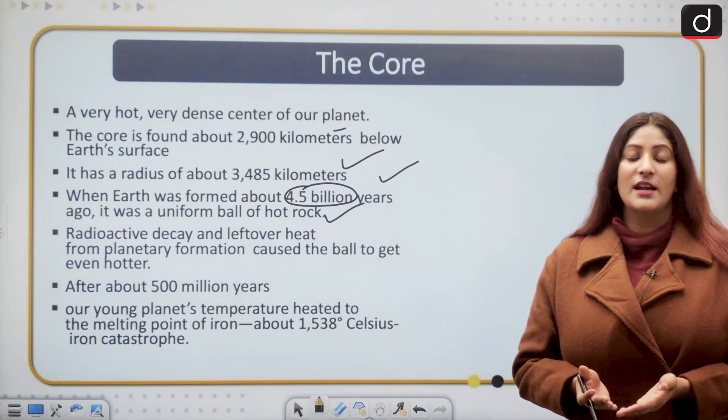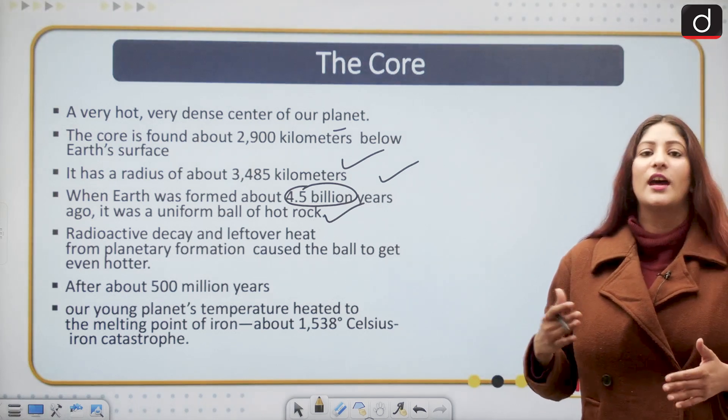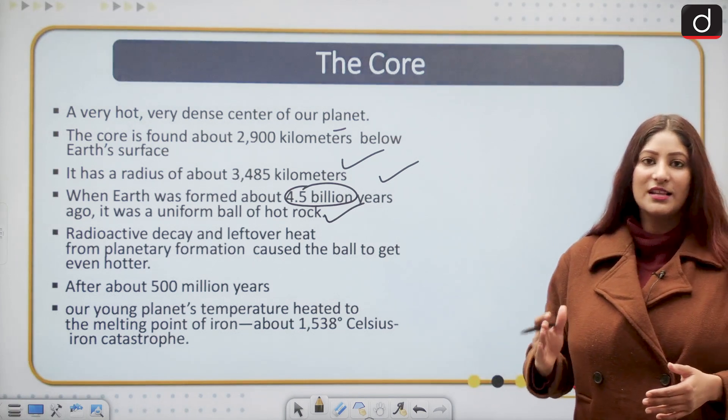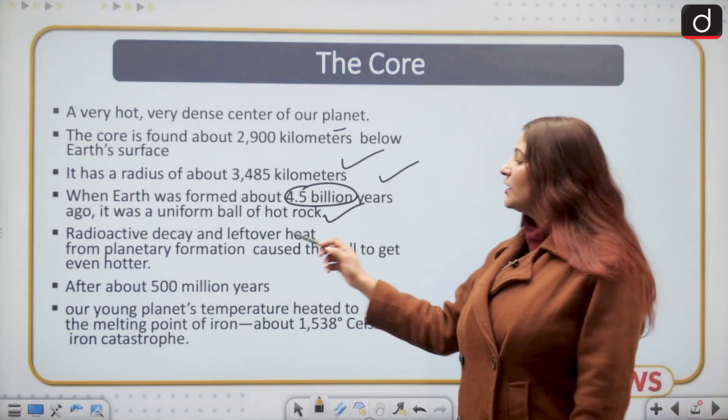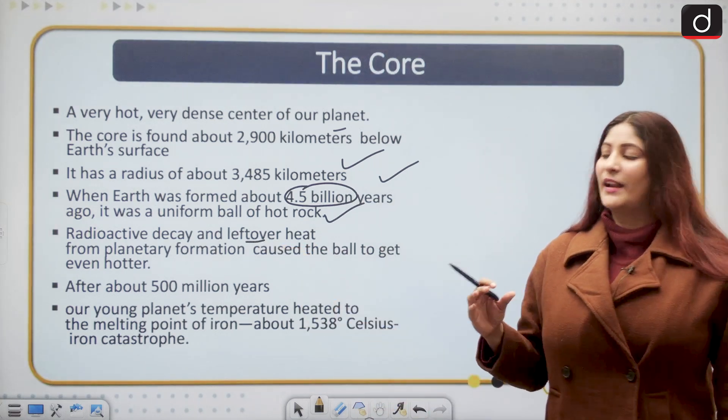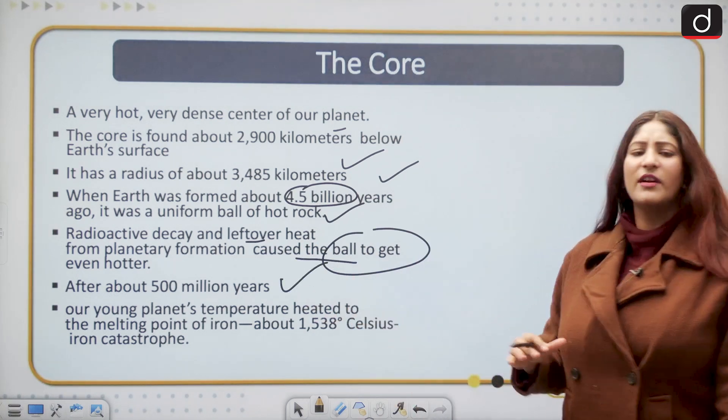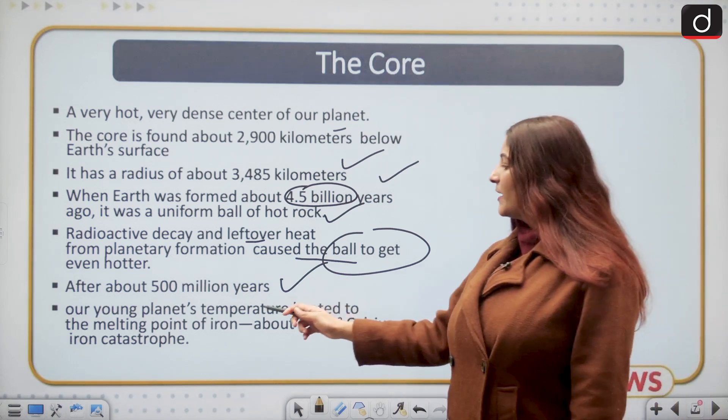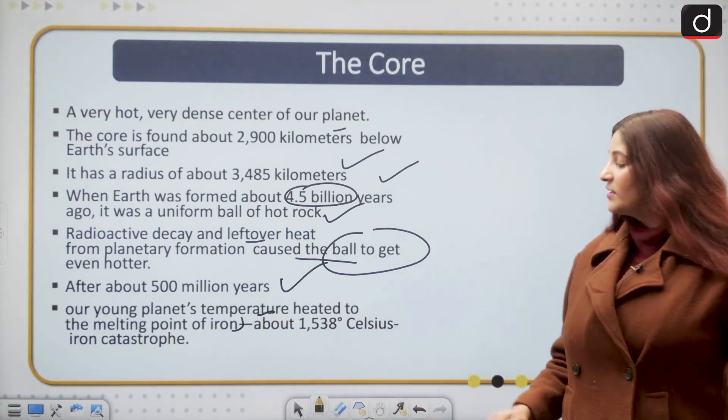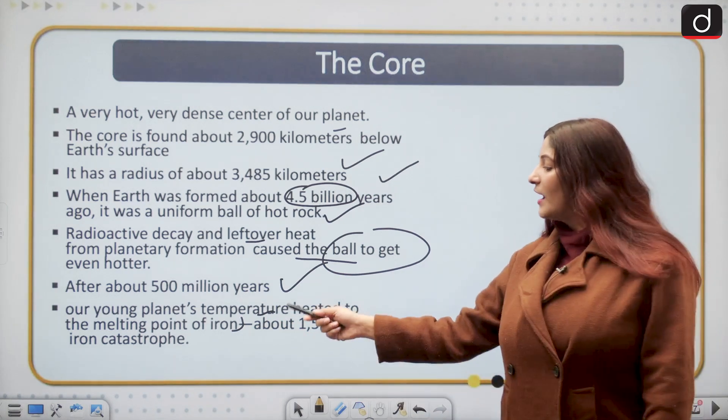Earlier it was a uniform ball but later on due to degasification and other phenomenon it started differentiating, and that is known as planetary differentiation. Radioactive decay and leftover heat from planetary evolution caused the ball to get even hotter. After about 500 million years, our young planet's temperature heated to the melting point of iron, about 1538 degrees Celsius, and this is known as iron catastrophe.